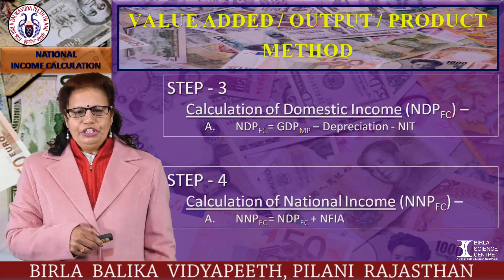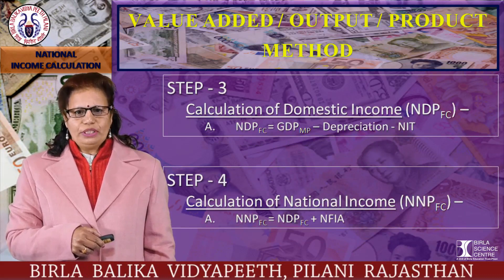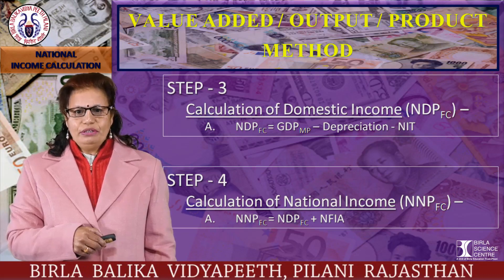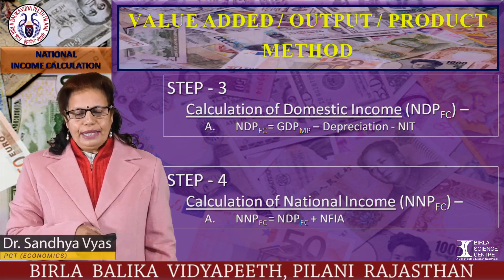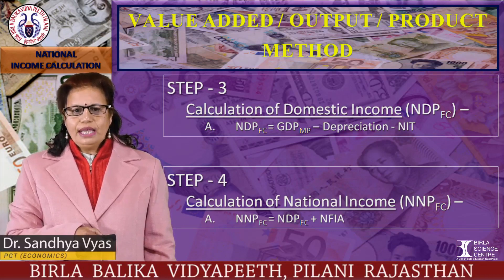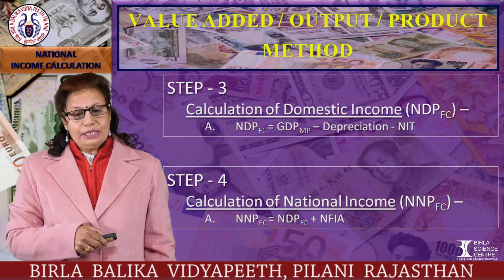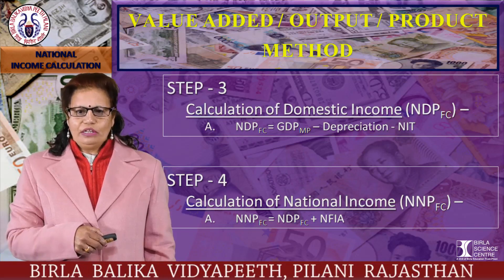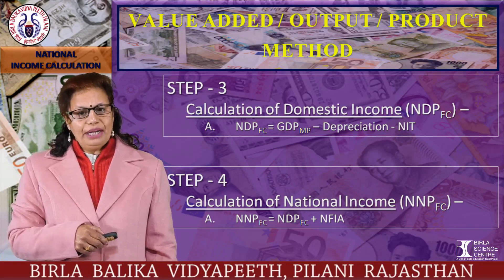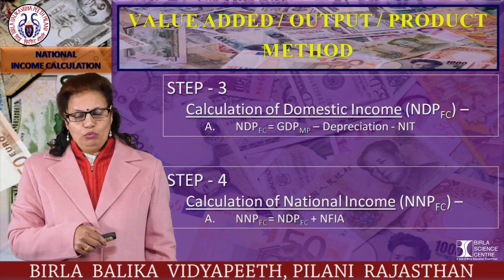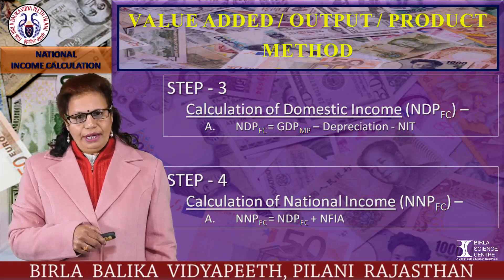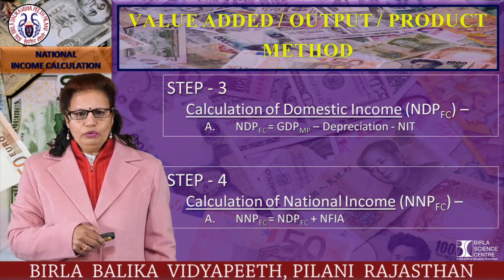Step 3: calculate NDP. NDP at factor cost (net domestic product at factor cost) equals GDP at market price minus depreciation minus NIT. Then calculate national income, i.e., NNP at factor cost, which equals NDP at factor cost plus NFIA (net factor income from abroad). Keep in mind whether the direction is 'from' or 'to' — from minus to gives NFIA. If 'from' is given you add it; if 'to' is given, you deduct it.